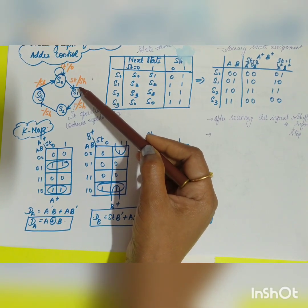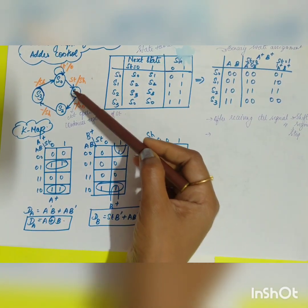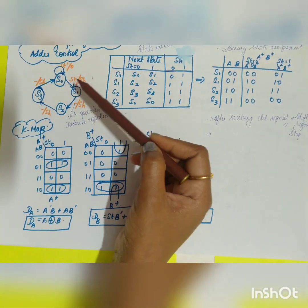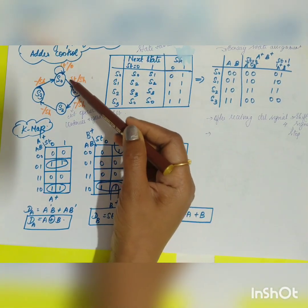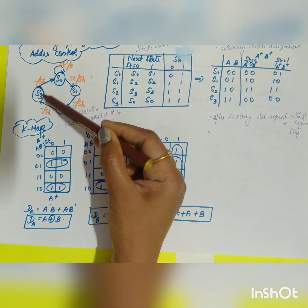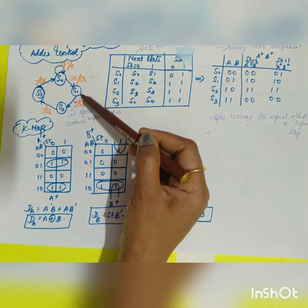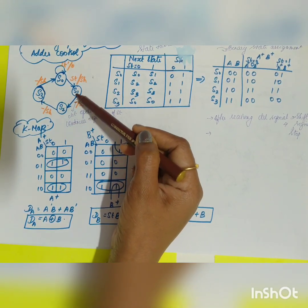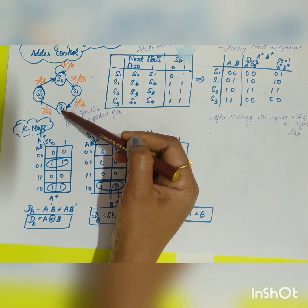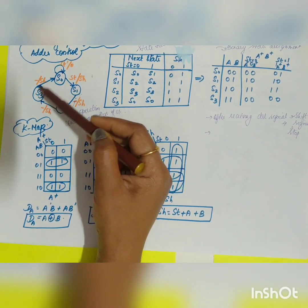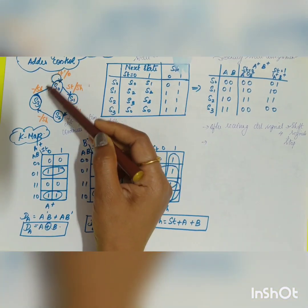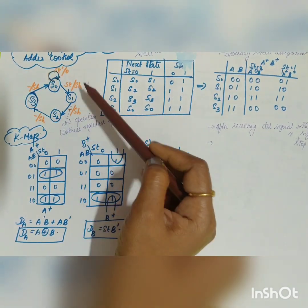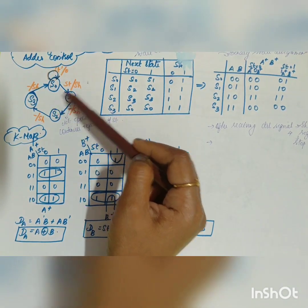The dash on transitions represents that the circuit operation continues regardless of the start signal — once started, it continues to the end. When shift equals one, the state moves from S1 to S2, then S2 to S3, then S3 back to S0, at which point the addition is completed. This is the complete state graph for the serial adder control.